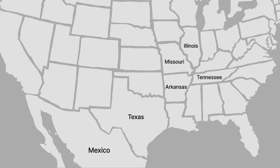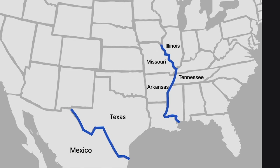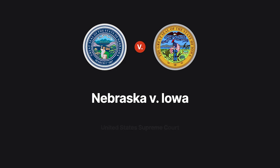Mexico and the United States, Illinois and Missouri, Tennessee and Arkansas — countries and states often use rivers as boundary lines. But what happens to such a boundary if the river changes course? We explore that question in Nebraska versus Iowa.